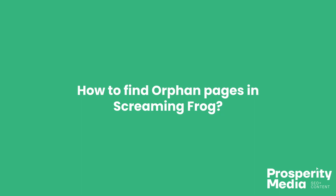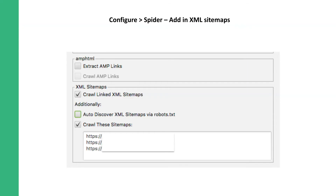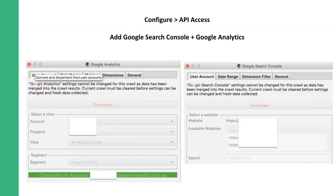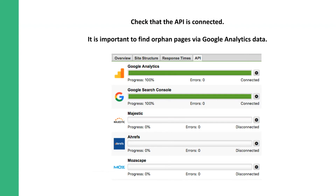There are two examples of how to find orphan pages. The first one is Screaming Frog. In Screaming Frog, you can go to Configure Spider and add in the XML sitemaps for a website — just click 'Crawl These Sitemaps' and put in your different sitemap URLs. The next thing you want to do is set up API access and add Google Search Console and Google Analytics API access to Screaming Frog.